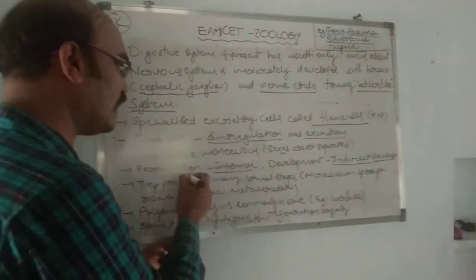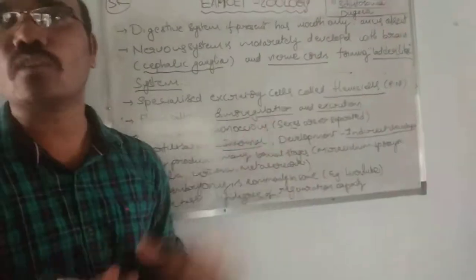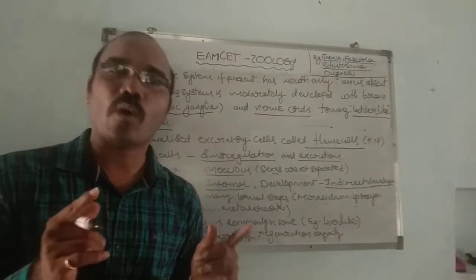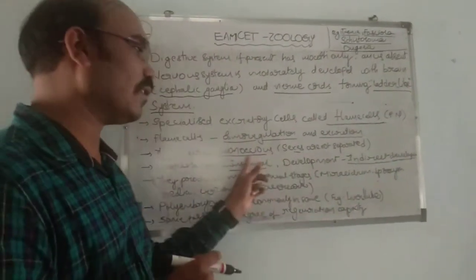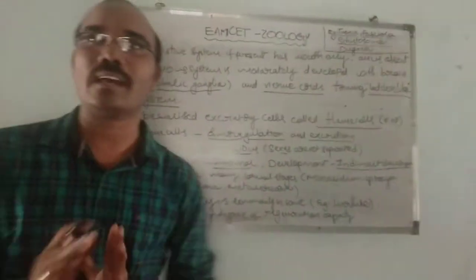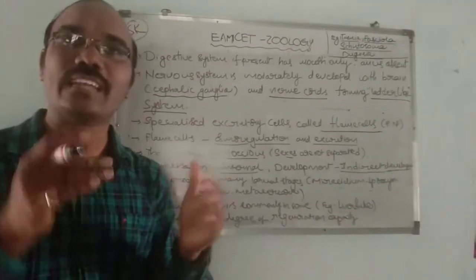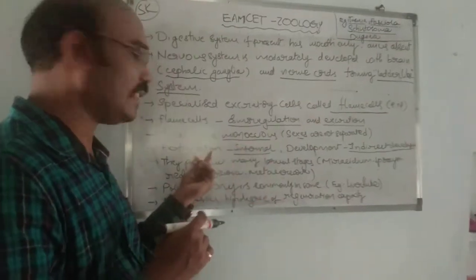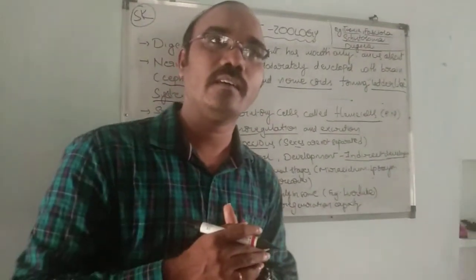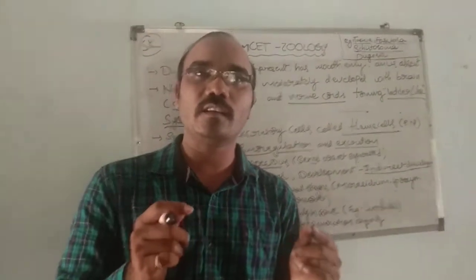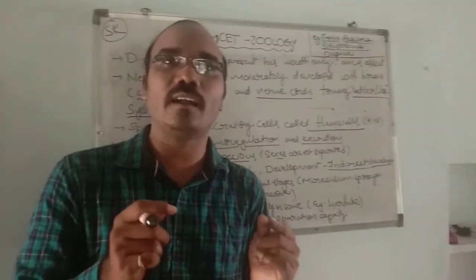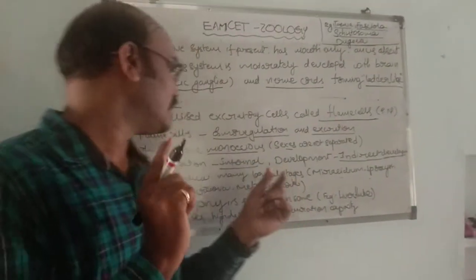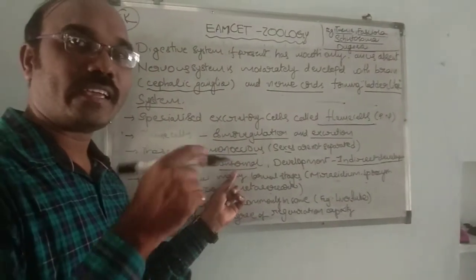The sexes are not separate — that is called monoecious. Both male and female reproductive organs exist in a single individual. Fertilization is internal — the fusion of male and female gametes takes place inside the organism.